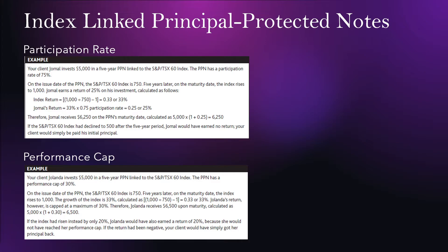You can also get PPNs that have a performance cap. Say you are doing the same sort of investment except it has a performance cap of 30%. The return is capped at a maximum of 30%, so if the index earned 33% you will only earn 30%. The only situation where the participation rate would be better is if the return were much higher than 30%. If the index only rose by 20%, you would just earn that 20% since it didn't reach the performance cap.